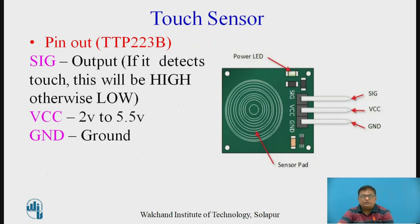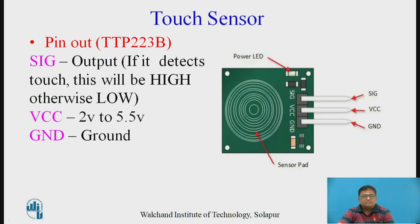The pinout of touch sensor TTP223B has three pins. Two of these are power supply pins: VCC and ground. VCC is to be connected to plus 2V to 5.5V — normally we operate at 3V — and ground is connected to ground. The output pin is defined as SIG, which stands for signal. SIG will be high when touch is detected; otherwise it will be at logic zero.